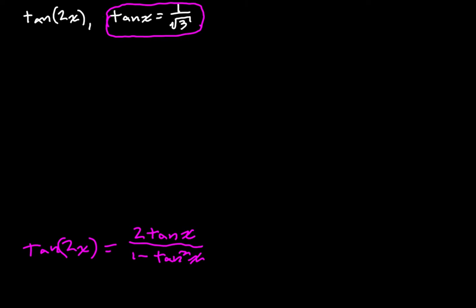So tangent of 2x, let's write this out in blue. So tangent of 2x is equal to two times the tangent of x, which is one over the square root of three, over one minus one over the square root of three squared. Great.